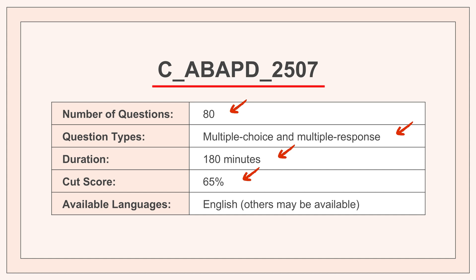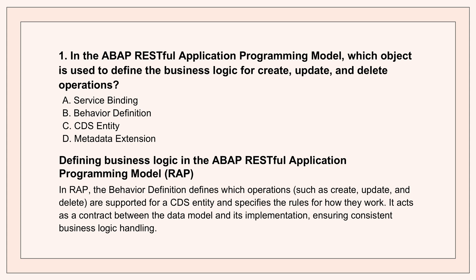ABAP RESTful Application Programming Model — RAP — it's totally central to modern ABAP. So when you're building with RAP, what's the key object used to define how data gets created, updated, or deleted? The cornerstone there is the behavior definition. Its whole job is to specify the business logic for those CUD operations — create, update, delete. It tells the RAP framework exactly which operations are allowed for a particular CDS entity.